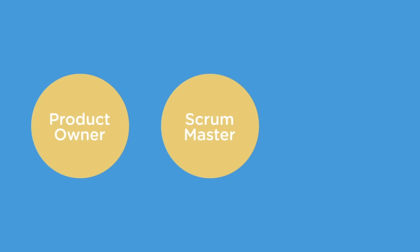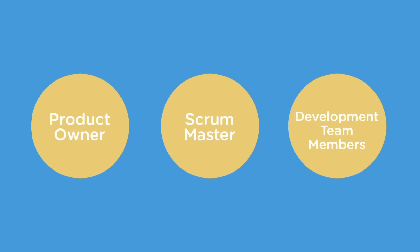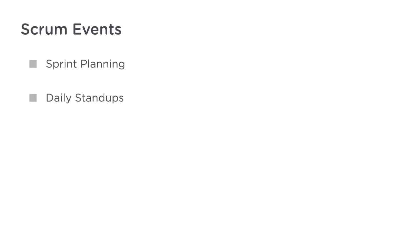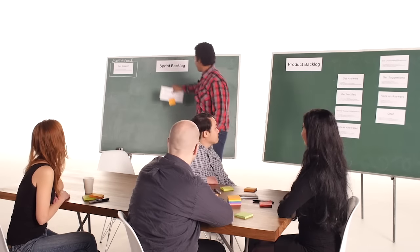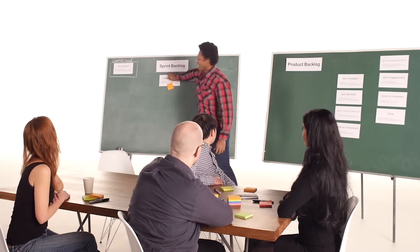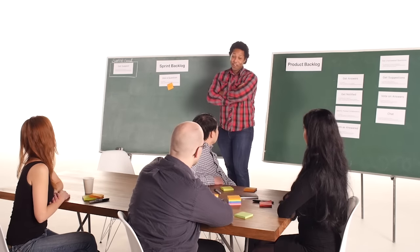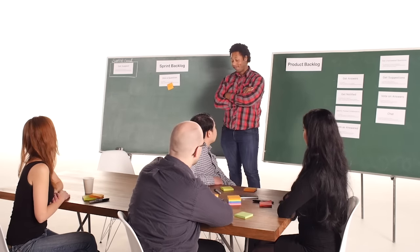In Scrum Basics, you'll learn the Scrum model, a commonly used flavor of Agile, which is well known for its clear definition of team members' roles and the activities carried out by the team. By the end of this course, you'll have a solid background, and you'll be ready to get started using Scrum. Join me on Treehouse for a free two-week trial.